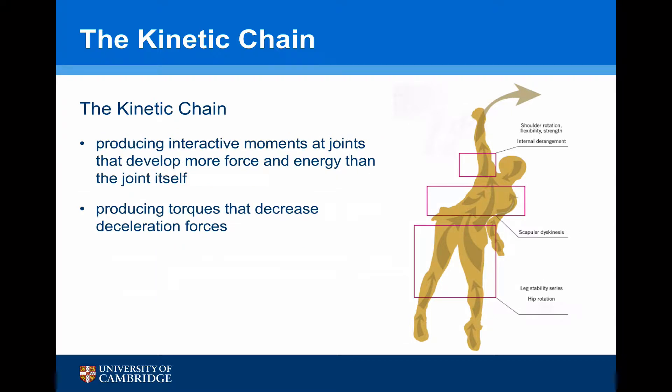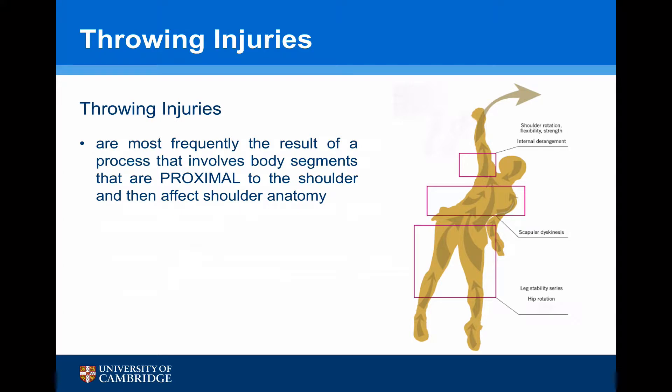In doing this, interactive moments are produced at the joints that are greater than the energy that the joint itself could produce. Torque is produced to decrease the deceleration forces. It's important to remember, with regards to throwing injuries, that they are most frequently the result of a process that involves body segments that are proximal to the shoulder, and then affect the shoulder anatomy itself.